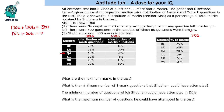Solving these equations — multiplying to eliminate variables — we get 25a = 100, so a = 4 and b = 1. This means there are 400 one-mark questions and 100 two-mark questions in the test.